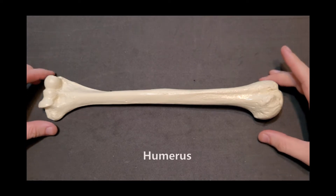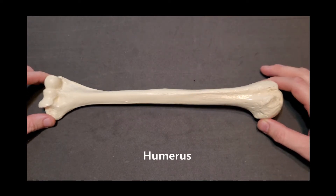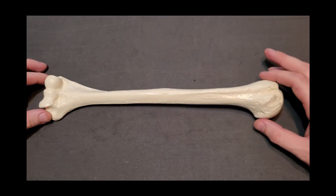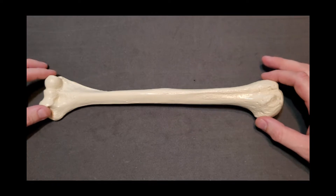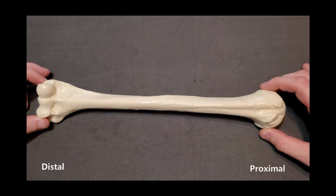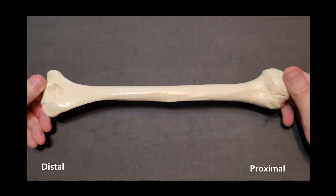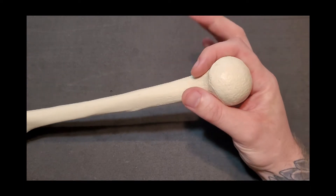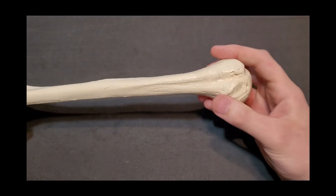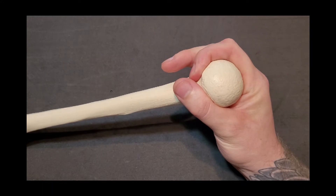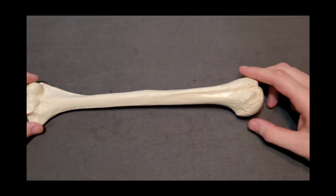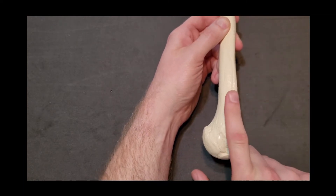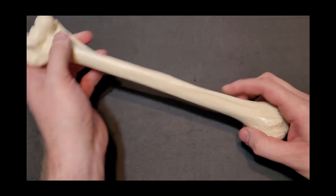The next bone of the upper extremity we're going to look at is the humerus. We have a right humerus on the table, looking at a superior view with the proximal end and distal end visible. One of the easiest landmarks to identify is the large smooth articular surface known as the head, which is a proximal bony landmark that faces medially.